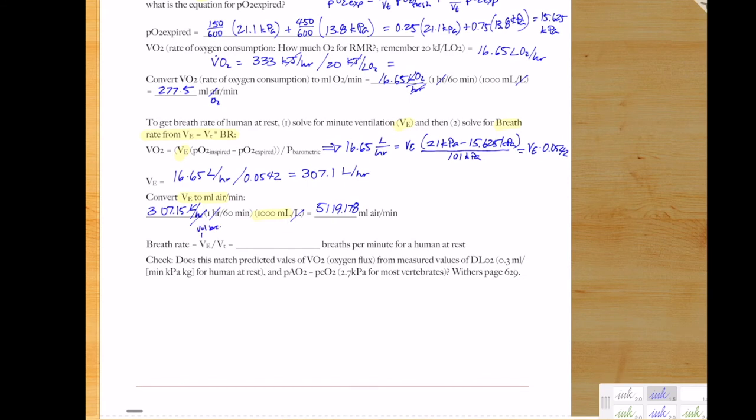So remember, the flow is breath rate times tidal volume. So to solve for breath rate, we take the volume breathed per minute divided by the volume breathed per breath. And that works out to be 8.53 breaths per minute.